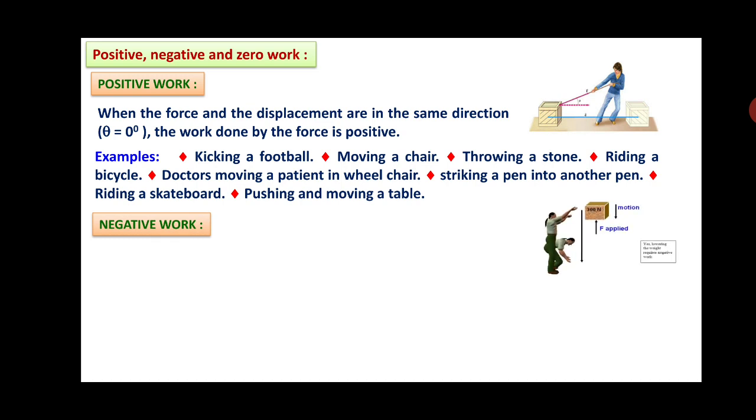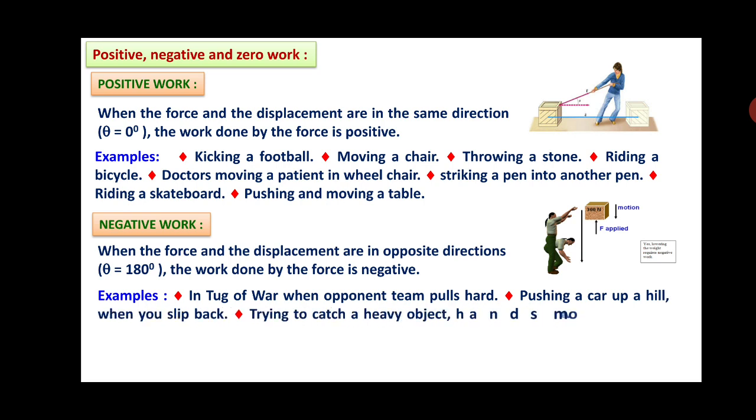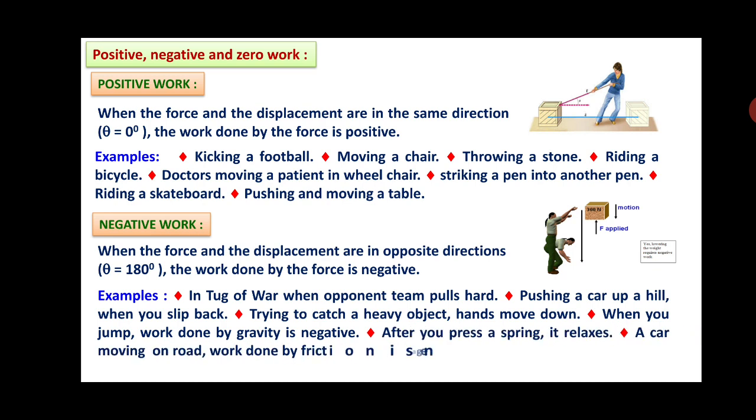Now we will see negative work. See this figure here. When the force and the displacement are in opposite directions, that is θ = 180°, the work done by the force is negative. The examples are: in tug of war when the opponent team pulls hard, pushing a car up a hill when you slip back, trying to catch a heavy object when hands move down, when you jump work done by gravity is negative, after you press a spring it relaxes in opposite direction, a car moving on a road the work done by friction is negative. These are different examples that give you an idea regarding the negative work.